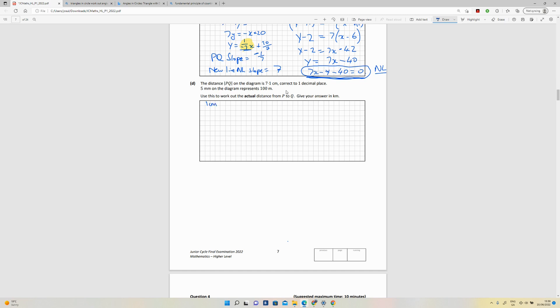So 1 centimeter is 10 millimeters. That means that 7.1 centimeters is 71 millimeters. Now 5 millimeters on the diagram represents 100 meters, so let's work out how many 100-meter stretches there are. We know that the full amount of it is 71 millimeters, so 71 divided by 5 will tell us how many stretches or how many legs of 100 meters long we have.